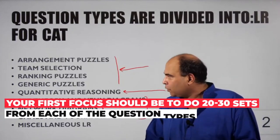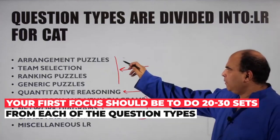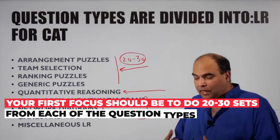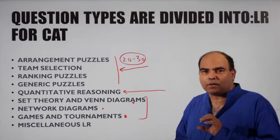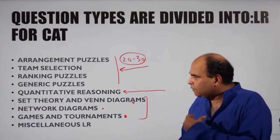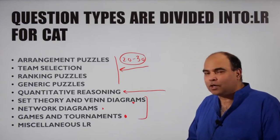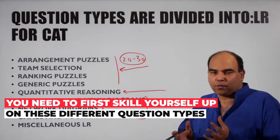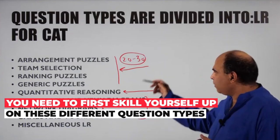Your first focus should be to do between 20 to 30 sets on each of these question types so you understand them. The skills required to solve a set theory question are very different from those required for quantitative reasoning, which are very different from games and tournaments. So you need to first skill yourself up on these eight topics, and you need to have a lot of passion—bring in the passion word on these eight topics.